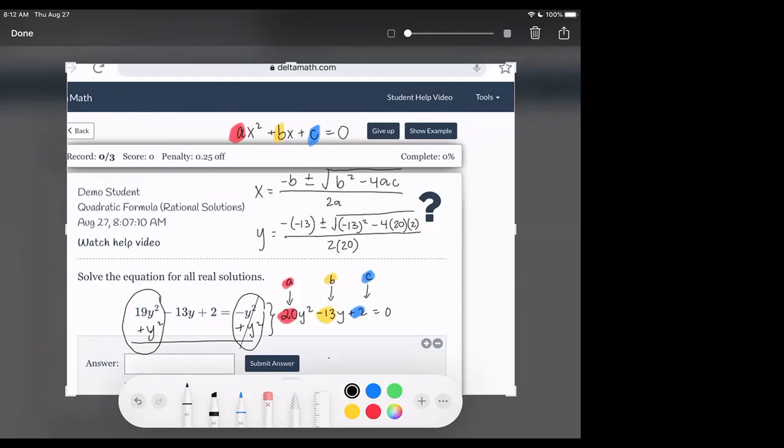Alright, interrupt me if you do have a question, but I'll just keep going then. So simplifying this further, we have a negative negative 13, so really that's just a positive 13, plus or minus the square root of, let's hope that I can fit this in.